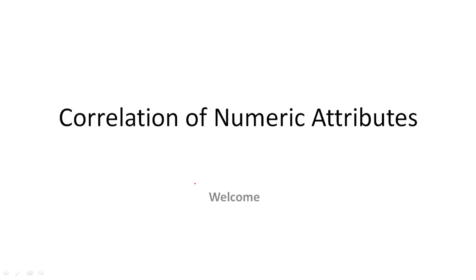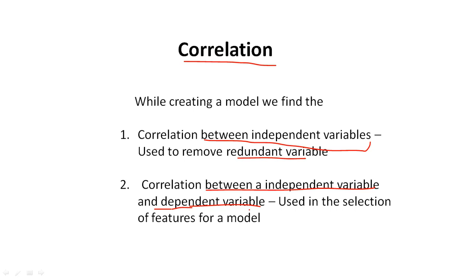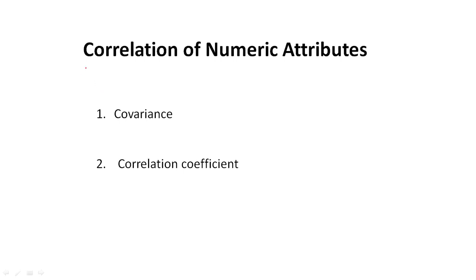Hello everyone, welcome to the statistics tutorial. In this video, we discuss the correlation of numeric attributes. We find correlation either between the independent variables or between an independent variable and the dependent variable. Correlation between independent variables is used to remove redundant variables, and correlation between independent and dependent variables is used in the selection of features for the model.